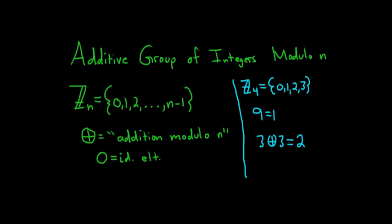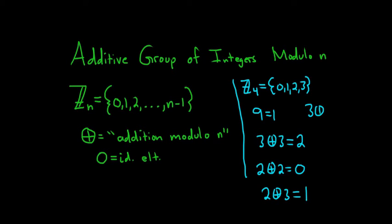If you do 2 circle plus 2, you get 4, but 4 goes into 4 one time with remainder 0. For 2 circle plus 3, you get 5, and 4 goes into 5 one time with remainder 1. For 3 circle plus 1, that's 4, and 4 goes into 4 one time with remainder 0. That's how you perform addition in these groups.